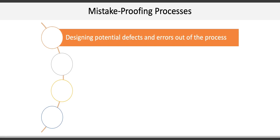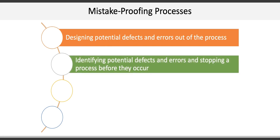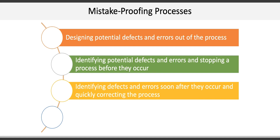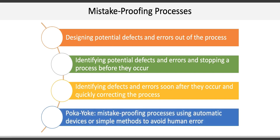Another element of designing effective processes is to increase quality or reduce errors through something called mistake proofing. Humans make mistakes — we forget things, we get tired, or we just don't understand some things. Mistake proofing involves integrating ways to reduce mistakes, and there are four general ways to do this. The first is to design potential defects and errors out of the process altogether at the design phase. A second way is to identify potential defects and errors and stop a process before they occur. Third is to identify defects and errors soon after they occur and quickly correct the process so it's error-free going forward. Finally, we can employ poka-yoke, a Japanese term for mistake-proofing processes using automatic devices or simple methods to avoid human error. A great example of poka-yoke is the french fry scoop used at McDonald's to fill containers with a consistent amount of product every time.